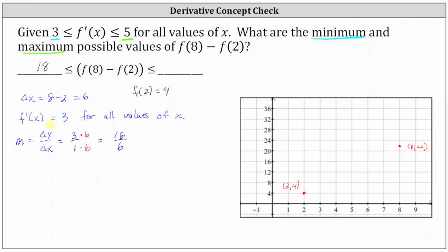Again, if f prime of x equals 3 for all values of x, not only is the slope of the tangent line always 3, but the graph of f of x would also have to be a line with a slope of 3 passing through these two points. Analyzing the graph, the change in x from 2 to 8 is 6, and the change in y — which equals f of 8 minus f of 2 — is 22 minus 4, which is 18.